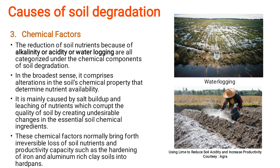Chemical factors relate to the various nutrients available in the soil. When you test soil, it will have some alkalinity or acidity — some soil is acidic in nature. If it is within a permissible range, it will be alright, but if there is an uneven distribution due to water logging or any other reason, it will have an adverse effect. In broader sense, it comprises the alteration in soil's chemical properties that determine nutrient availability. It is mainly caused by salt buildup and leaching of nutrients, which corrupt the quality of the soil by creating undesirable changes in essential soil chemical ingredients.